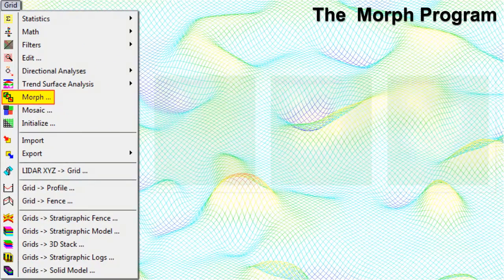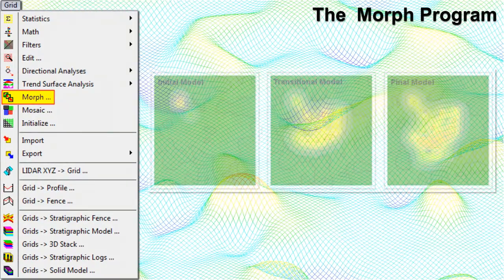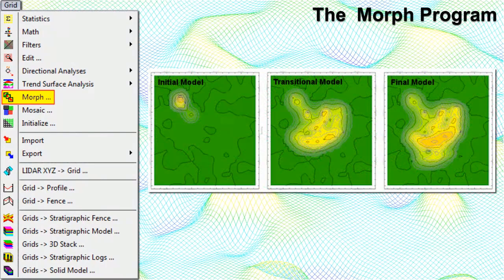The Morph program generates a series of contour map images — and optionally the intermediate grid models — given two end-member grids. The images may be shown in rapid succession to create a movie depicting changes in groundwater contamination, glacial melting or growing, subsidence, volcanic swelling, pre-earthquake bulging, and in-situ leach monitoring.